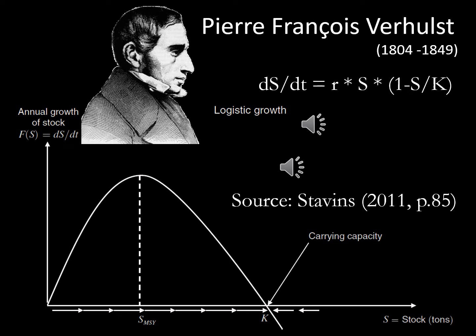Let us consider Verhulst's equation for a moment. The change of population over time, noted here as ds/dt, is equal to some positive constant growth rate r times the size of the population s, times (1 minus s over k). This k is the mathematical expression for the carrying capacity. When the population is smaller than the carrying capacity, or s over k is smaller than 1, the total term is positive and the population grows. As the population approaches the carrying capacity, growth slows down and ceases as soon as the population has reached its maximum size given the carrying capacity.